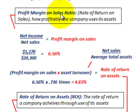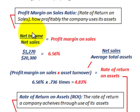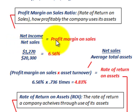Now for our profit margin on sales ratio, this is the rate of return on sales and it measures how profitably the company uses its assets. You take your net income for the year and divide it by your net sales, and that equals your profit margin on sales.